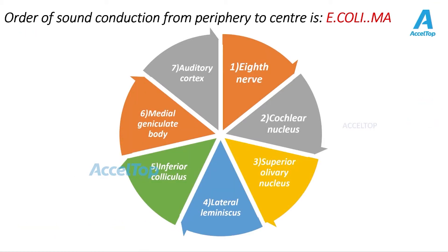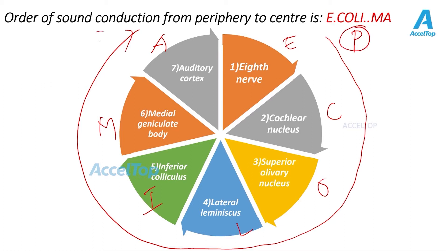See the answer is option D as we discussed. Just remember this picture. You reinforce it in your mind. E for 8th nerve, cochlear nucleus, olivary superior olivary nucleus, lateral lemniscus, inferior colliculus, medial geniculate body and auditory cortex. Remember this circle. This is from this direction. So this is periphery and this is center. You keep it in mind, you mind map this particular image so that it gets reinforced in your memory.